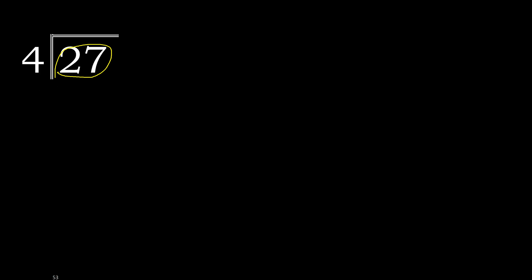but not greater. 4 multiply by 7 is 28 — 28 is greater. 4 multiply by 6 is 24 — 24 is not greater. 27 minus 24 is 3.